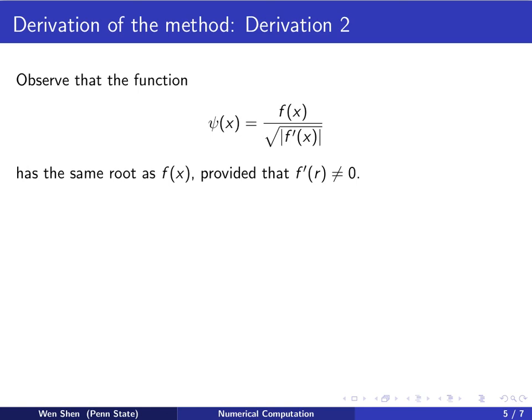Now we look at another derivation. Derivation number 2. So we define a function ψ, ψ(x) equals f(x) over square root of f'(x) in absolute value. We see that the function ψ would have the same root as f(x), provided that the f prime at the root is not 0.